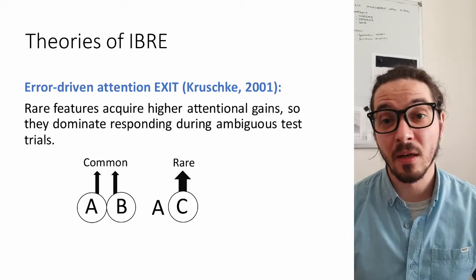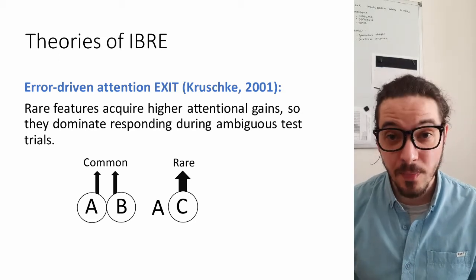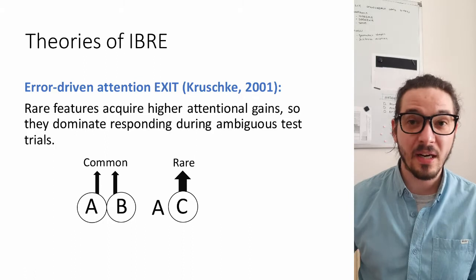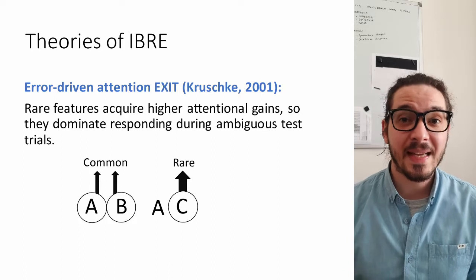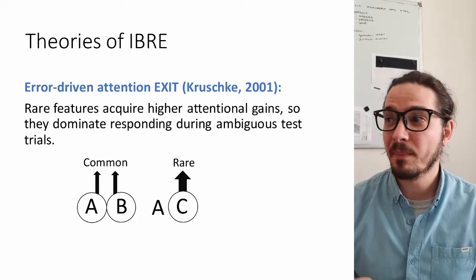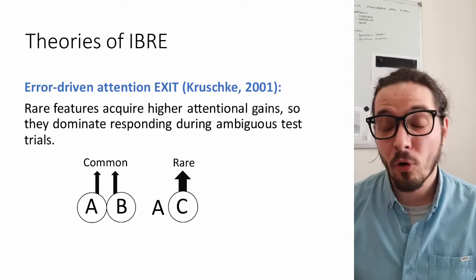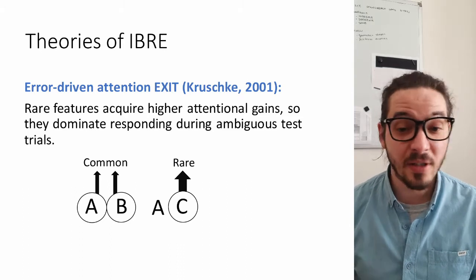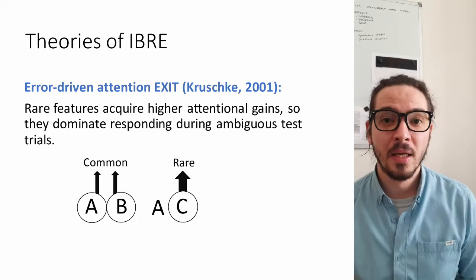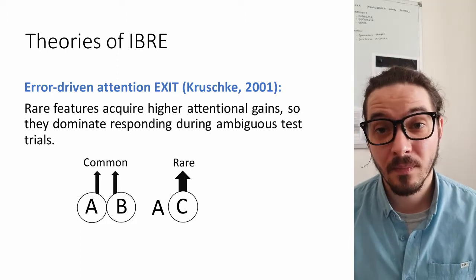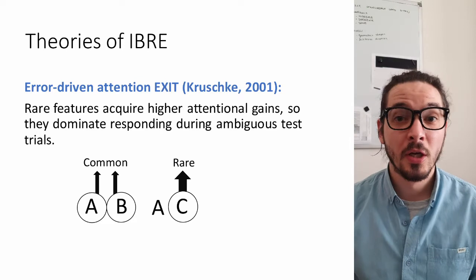This is a puzzling phenomenon, but now that we have defined it operationally we can look at how certain theories might explain this behavior. There are multiple theories trying to explain this systematic rare preference. One of the most notable ones is EXIT — an exemplar-based, error-driven attentional learning model. It is a formal computational model that formalizes the way selective attention is allocated in order to reduce prediction error. In an inverse base rate experiment, EXIT would first learn the common disease.